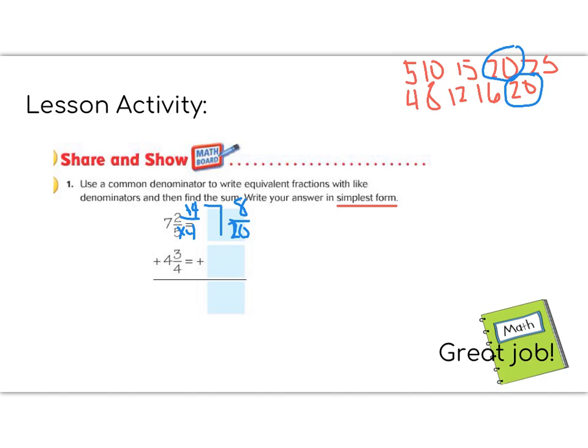Which means we have to multiply by 4 on the top. 2 times 4 is 8, and then we bring our 7 over. Now let's do our second fraction. We're still going to make our denominator 20. So how many times do we have to multiply 4 to make 20? We'll have to multiply by 5. If we multiply by 5 on the bottom, we have to multiply by 5 on the top. 3 times 5 is 15. Now we bring over the 4.